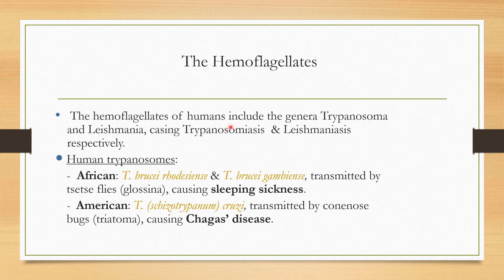The hemoflagellates of humans include Trypanosoma, which causes trypanosomiasis, and Leishmania, which causes leishmaniasis. The first human trypanosome is African sleeping sickness, spread by the tsetse fly. The second is Chagas disease, found in Central and South America, spread by the kissing bug.